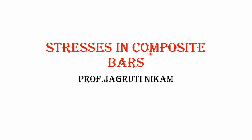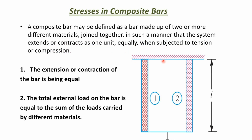Welcome to this video lecture on stresses in composite bars. A composite bar may be defined as a bar made up of two or more different materials joined together in such a manner that the system extends or contracts as one unit equally when subjected to tension or compression. In this image, the internal bar is of one material and the outer bar is of a different material, joined together, and the whole composite bar is subjected to one constant load with one end fixed.